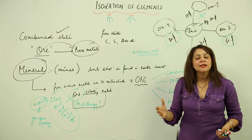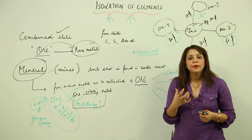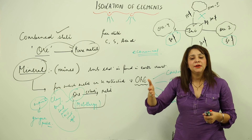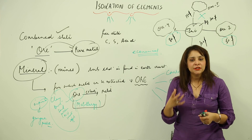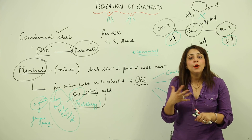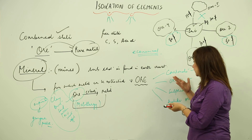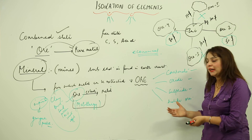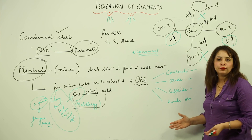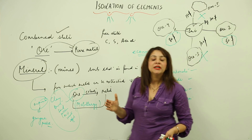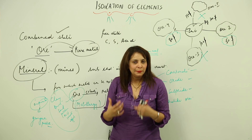Now we are going to start with the types of ores. I want to make you familiar with which metal or element is found in the earth crust, its percentage, and in which form its ores exist — whether oxide ore, sulphide, carbonate, or halide. We will now look at the different types of ores for different important metals.